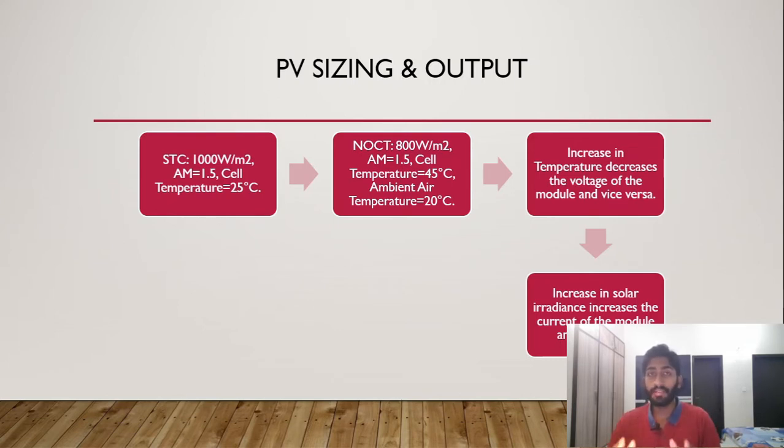There's some things that we need to look at. The first thing is the STC, which is the standard testing conditions for solar modules. Normally 1000 watts per meter squared, the solar irradiance, the air mass thickness is 1.5, that's the default value, and the cell temperature of the solar modules at STC is 25 degrees Celsius.